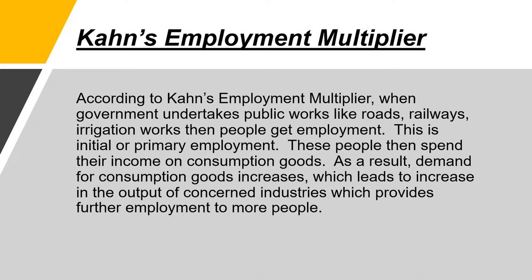According to Kahn's employment multiplier, when the government undertakes public works like roads, railways, and irrigation, people get employed — this is initial or primary employment. These people then spend their income on consumption goods, which increases demand. As a result, output in concerned industries increases, which provides further employment to more people. More industries means more people will be employed.